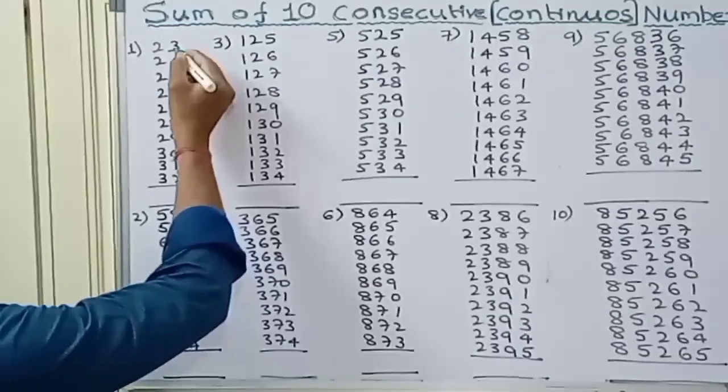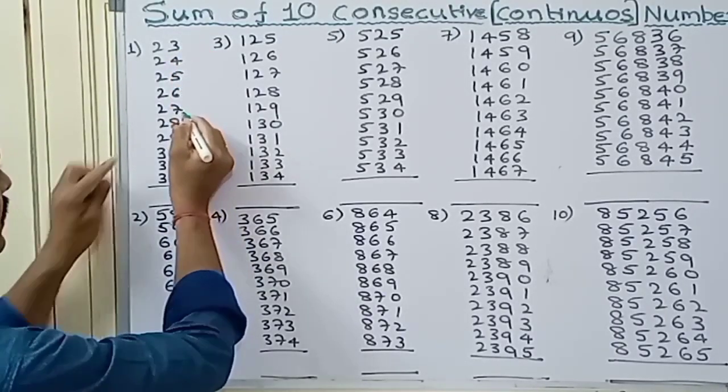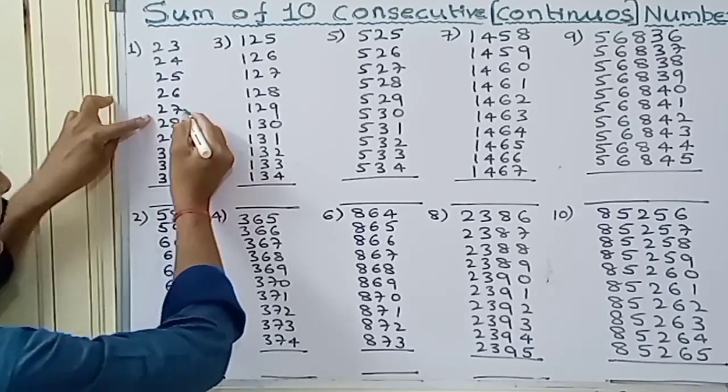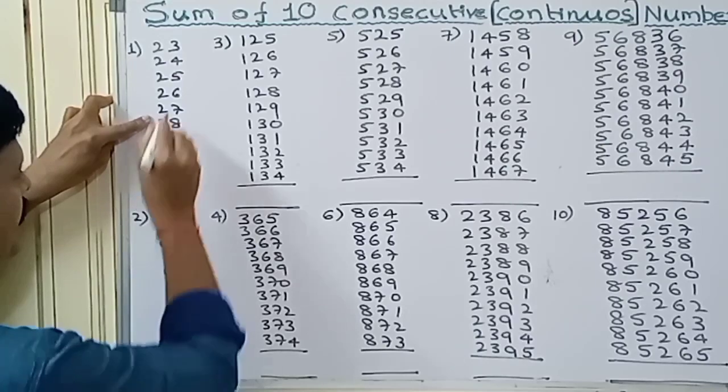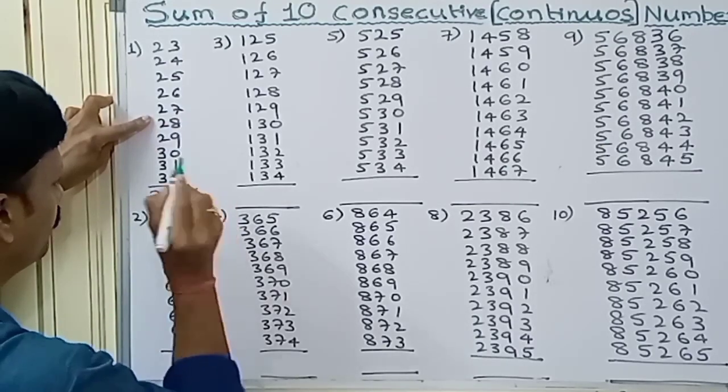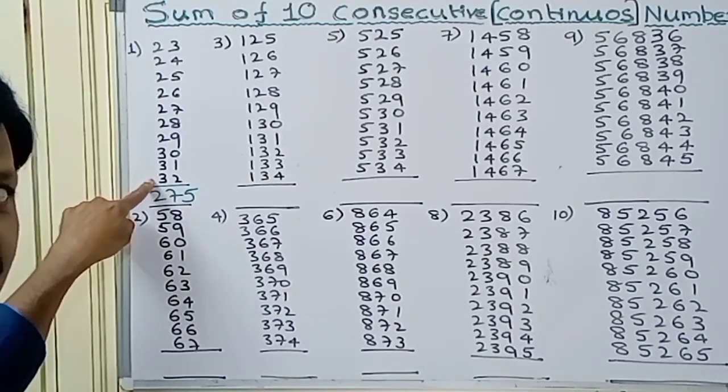In this technique, from the beginning of the numbers just count 1, 2, 3, 4, 5. Whatever the 5th entry, write that down here, 27, and put 5 for this 5th entry. The sum of the numbers from 23 to 32, continuous 10 integers, is 275.